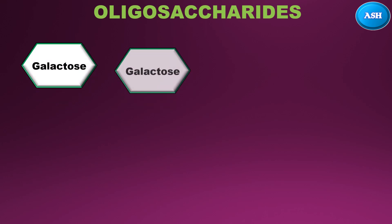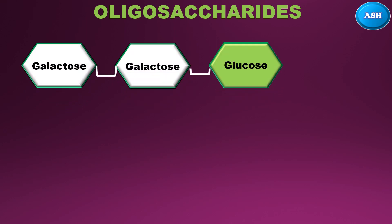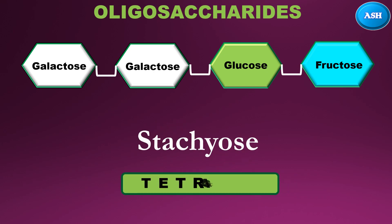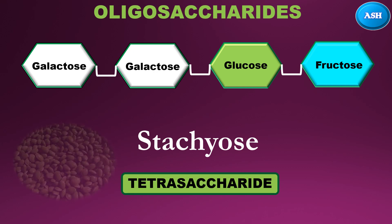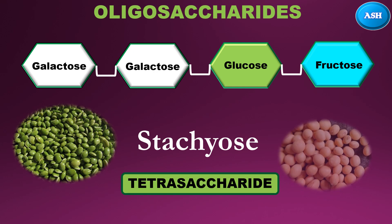The second oligosaccharide has four units — two galactose, one glucose, and one fructose — which are linked together to form stachyose. This is also known as a tetrasaccharide. Stachyose is found in green beans and soya beans.